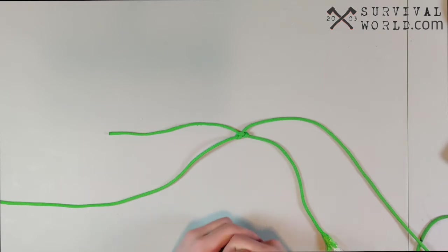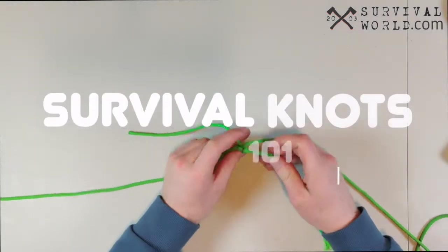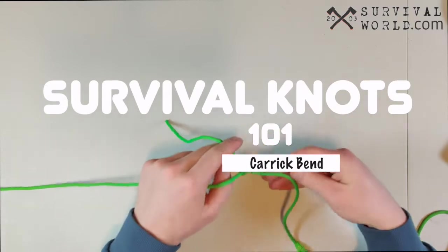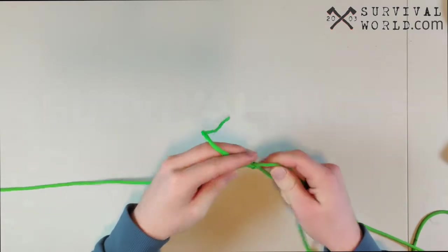Hey everybody, this is Tristan from Survival World and today's tutorial in our survival knot series is on the carrick bend. It's also called the Josephine knot or the sailor's breastplate.